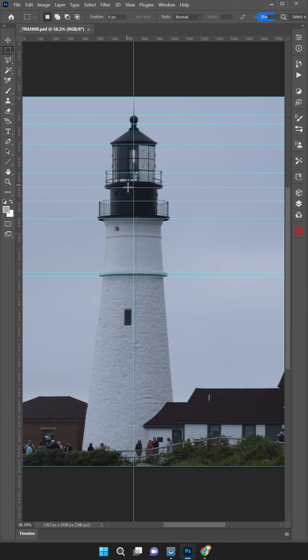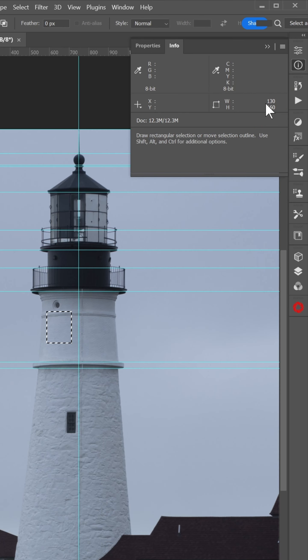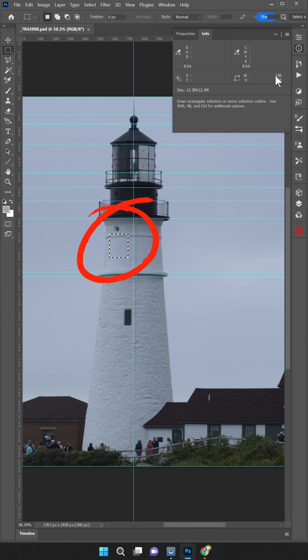Let's switch to the selection tool and drag to create a selection. It says 130 by 160 pixels. What that means is this area is 1.3 meters by 1.6 meters. So you can see that you can use this method to measure any part of the lighthouse.